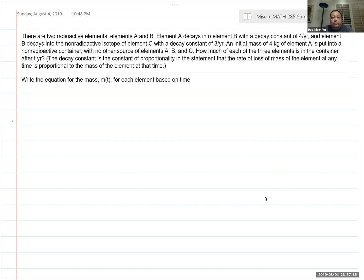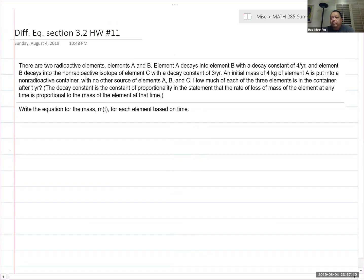There are two radioactive elements. This is from Section 3.2, homework number 11 online. It may be some other different number in the book. There are two radioactive elements, elements A and B. A decays into B with decay constant of four per year. B decays into C, decay constant of three per year.